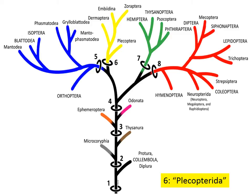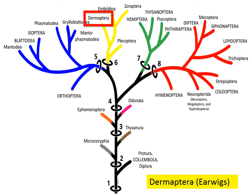Next, we'll forge forward to ring number six on this tree — the group traditionally referred to as Plecopterida. A number of orders have been lumped together historically here, but again, this particular arrangement is convenient to talk about some of these groupings without necessarily being indicative of the true phylogeny. So the first order we're going to talk about in this group is Dermaptera, or earwigs.